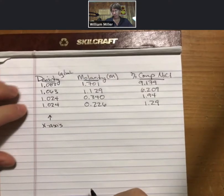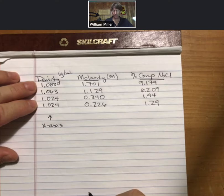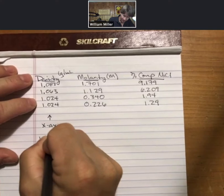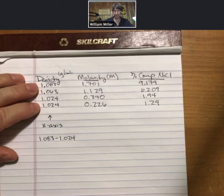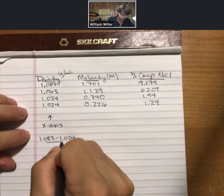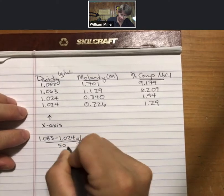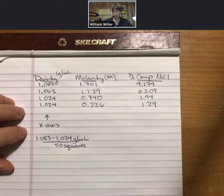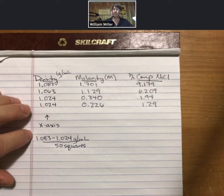And we want to include all of our data points. So our data points fall between 1.08 and, let's just do 1.083 minus 1.024. So these are the limits of our data. And so that's the grams per milliliter that we need to graph. And there are 50 squares.